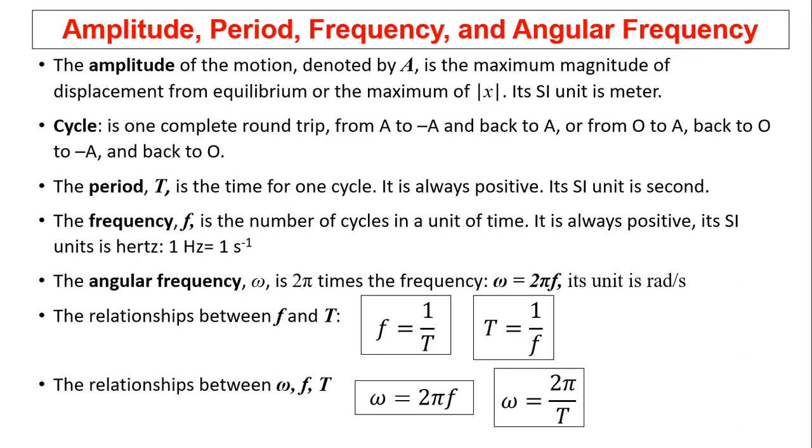The frequency f is the number of cycles in a unit of time. It is always positive. Its unit, because it's one over time, is one over second. And we have a new name for it called hertz.